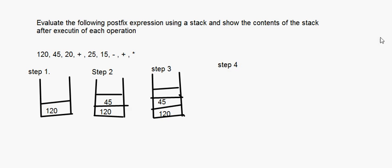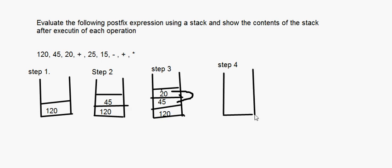Step 4: we read a plus sign — it is an operator. The plus is applied to the top two elements: 45 plus 20 equals 65. So those two are popped and 65 is pushed. The stack is now 120, 65.